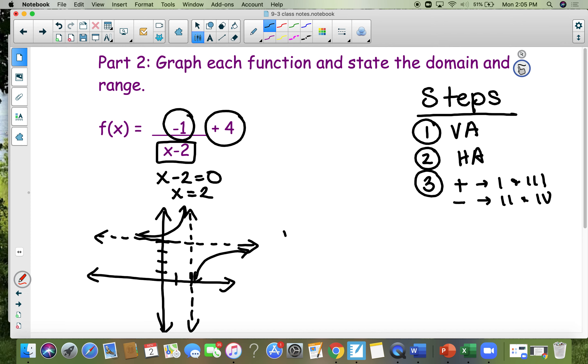The domain and the range are all going to be negative infinity to positive infinity. So the domain is x, so it's except x equals 2 and except y equals 4. Final answer. And that's how you graph fractions.